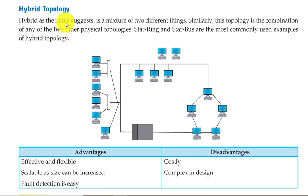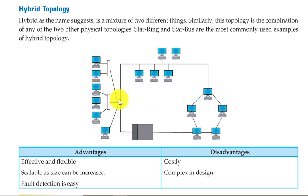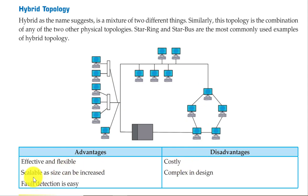Next is hybrid topology. Hybrid means it is a mixture of two topologies — for example, star-ring or star-bus. Two topologies are mixed together. Advantages: it is effective and flexible, scalable, and the size can be increased easily. Fault detection is easy. Disadvantages: it is very costly because cables, hubs, switches, and bridges are expensive, and the design is complex.